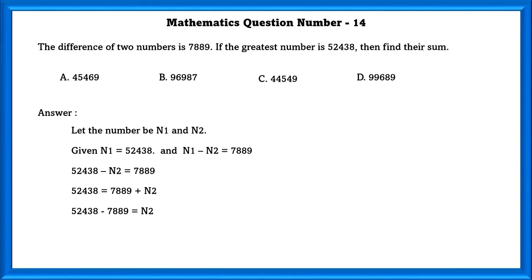And then we have to subtract. If we subtract 52438 and 7889, we will get the value of N2. So, N2 is equal to 44,549. They have asked to find their sum. So, if we add these two numerals, we will get 96,987.